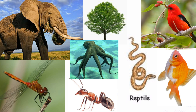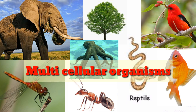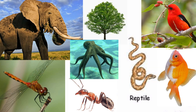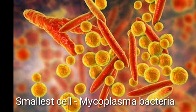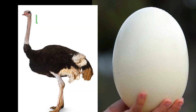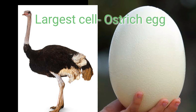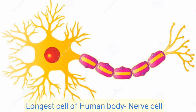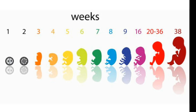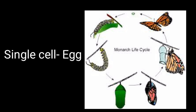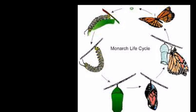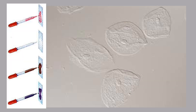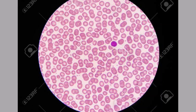Here are pictures which are examples of multicellular organisms. Multicellular means their body is made up of more than one cell. The smallest cell is mycoplasma bacteria. The largest cell is the egg of an ostrich, and the longest cell in our body is the nerve cell. Life of every leaving organism begins from a single cell. Cells can be seen under a microscope only after staining, that is colouring.